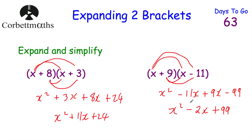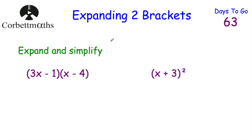So we've expanded and simplified that. If you got both of those correct, well done! Now let's look at two more. Can you expand and simplify (3x − 1)(x − 4), and also (x + 3) all squared? Feel free to pause the video and try these two questions.